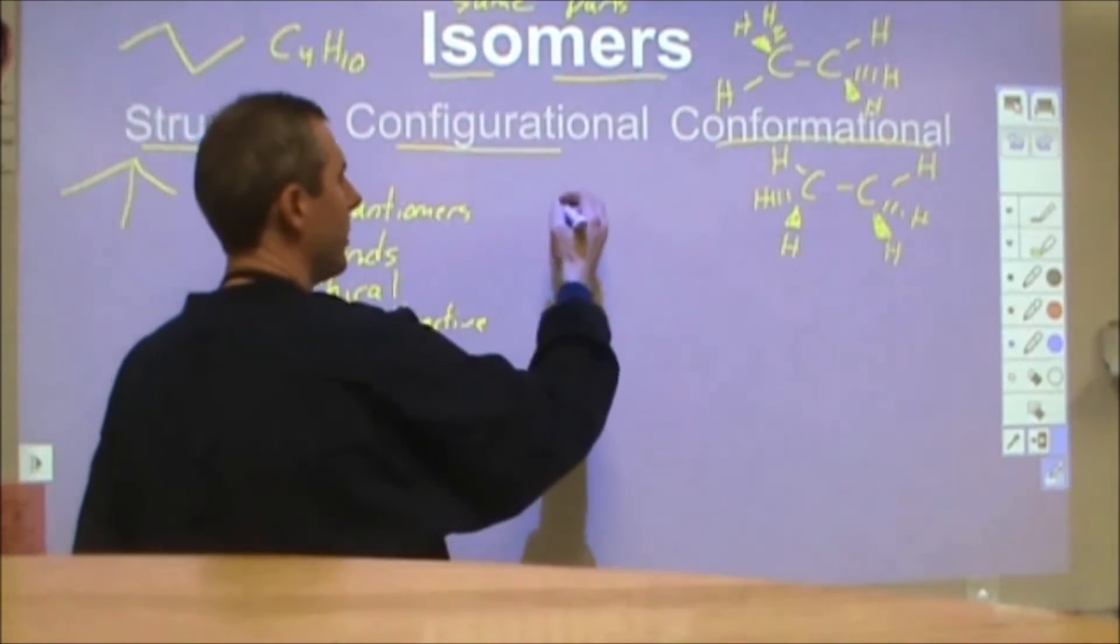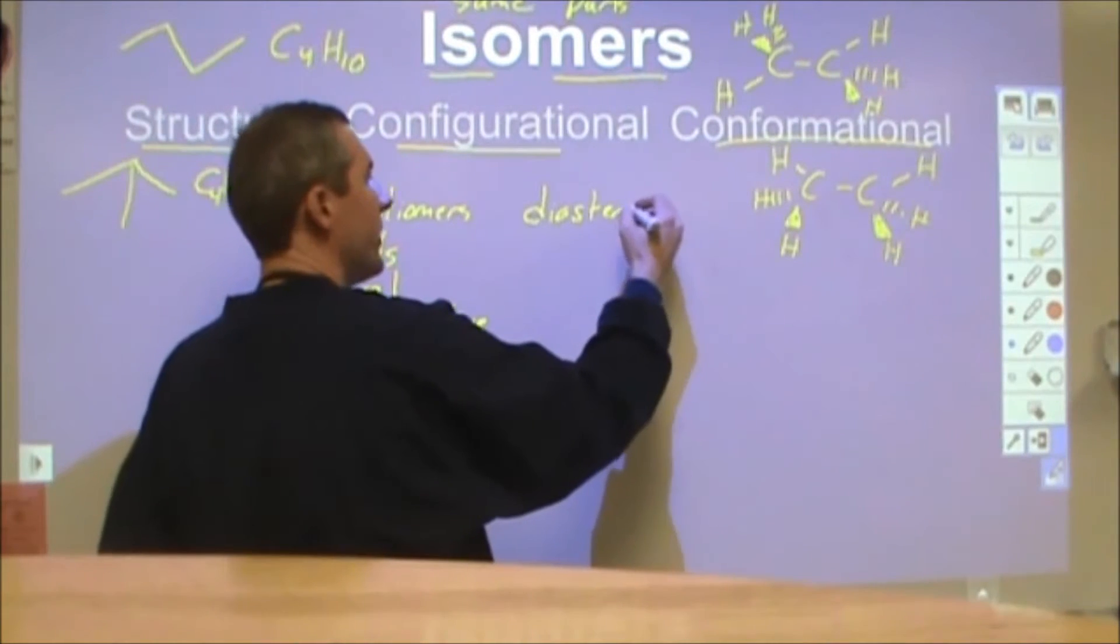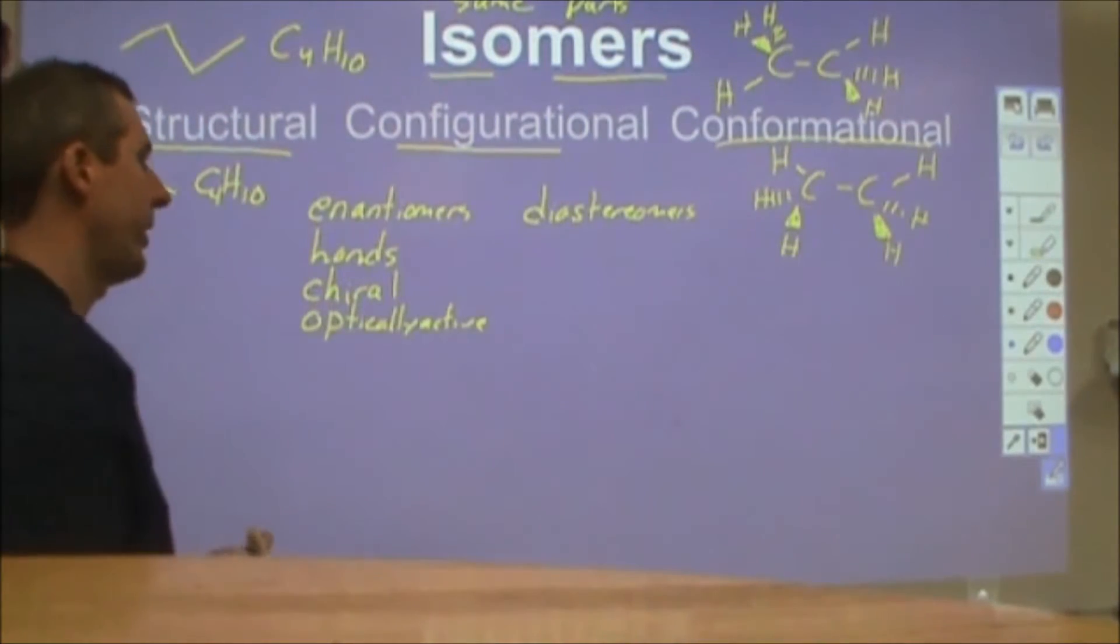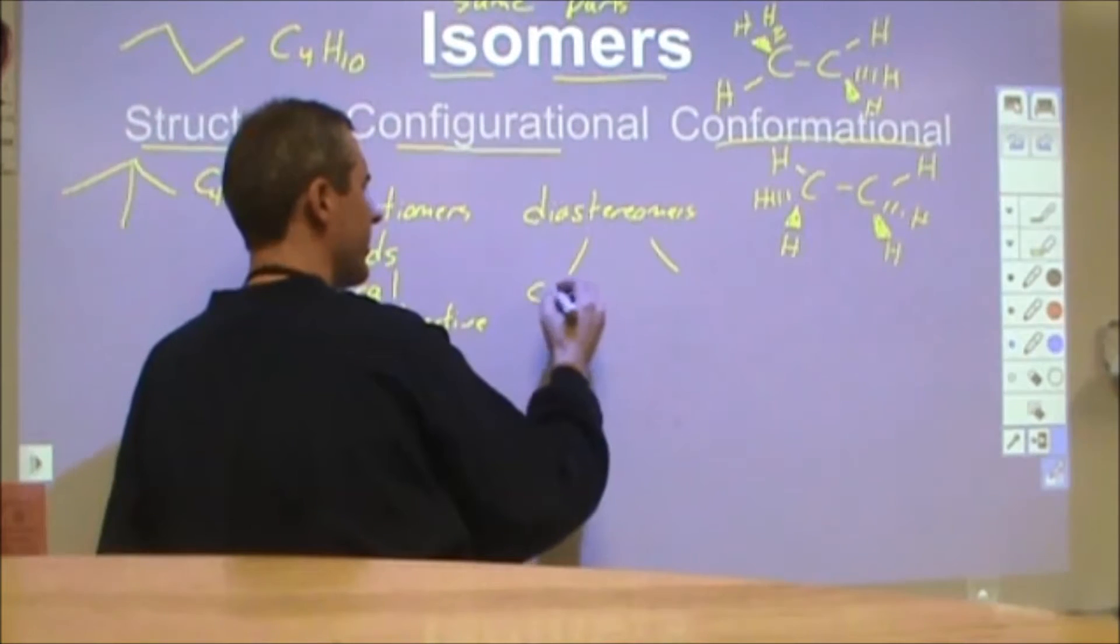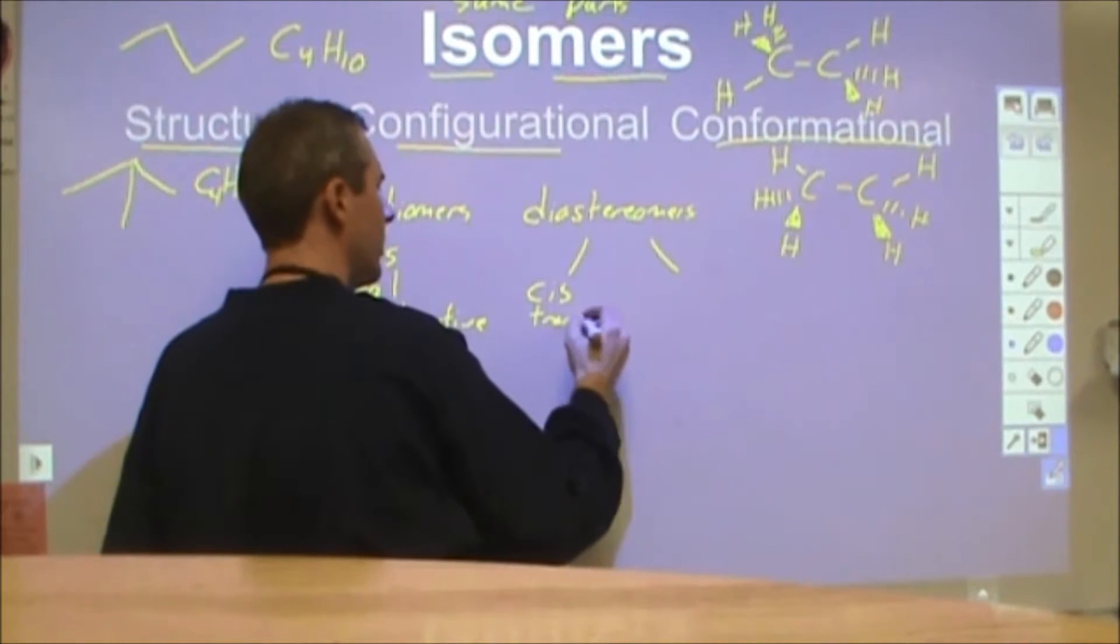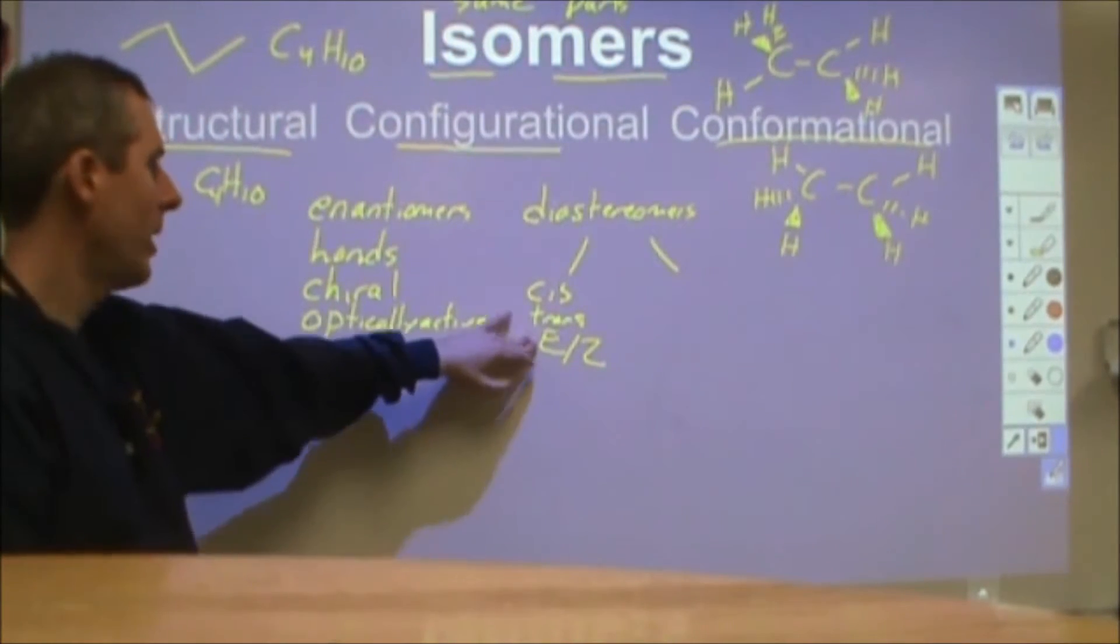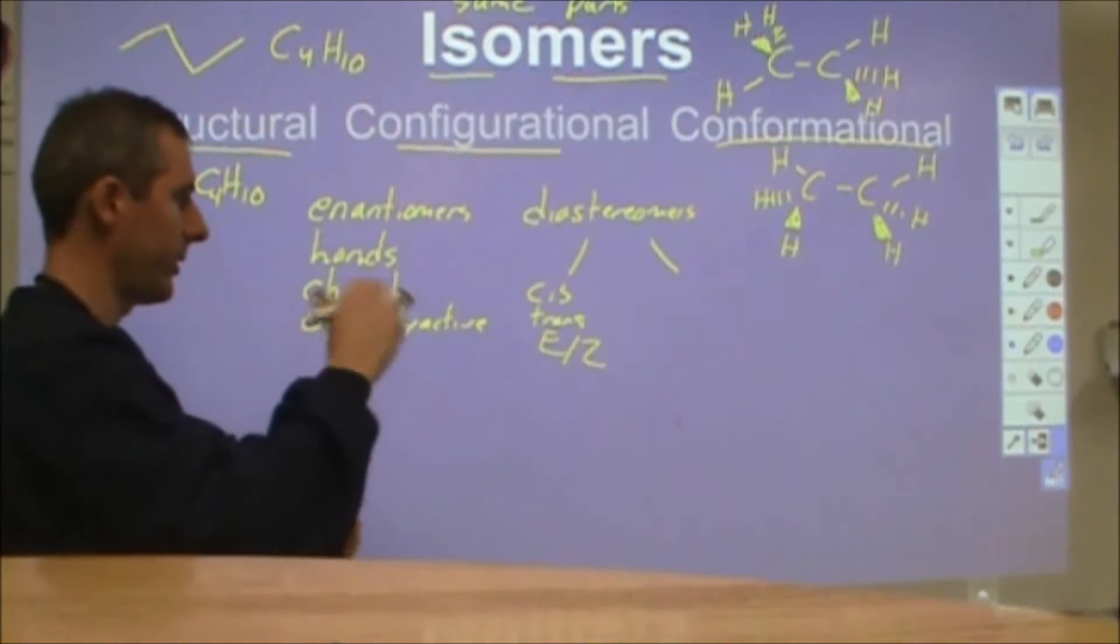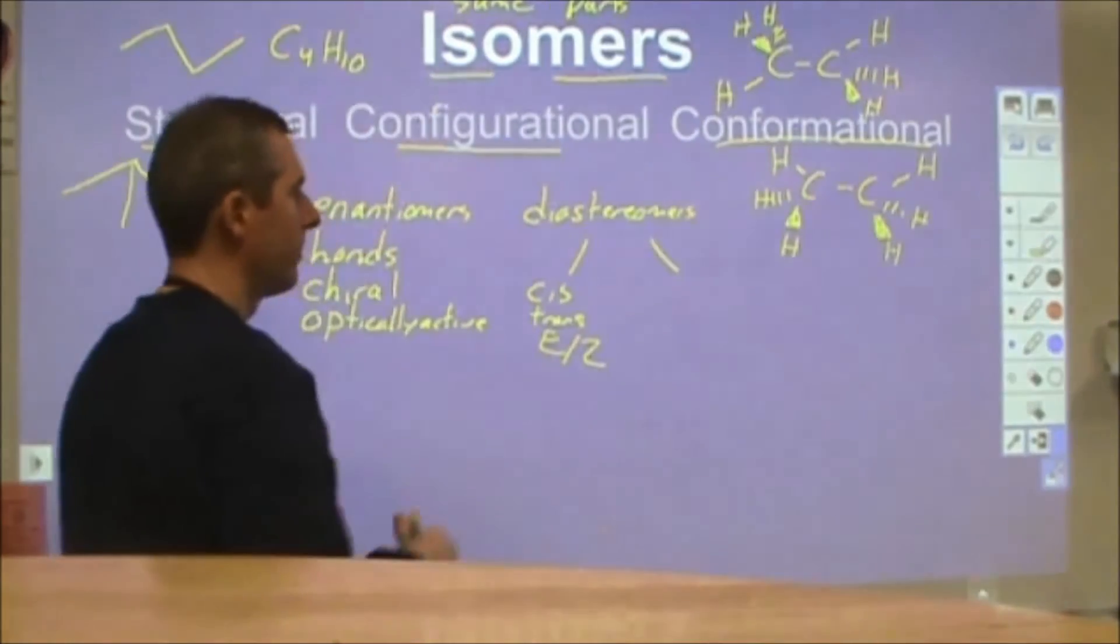Now enantiomers is one kind of configurational isomer. The other kind are called diastereomers. Diastereomers really just means anything that's not an enantiomer that is a configurational or stereo isomer. There are two branches of this. One is cis and trans where E and Z kind of pairs. You could look at alkenes for that, things with double bonds. And you can also look at cyclic groups where the constituents are above or below the plane of the cyclic structure.